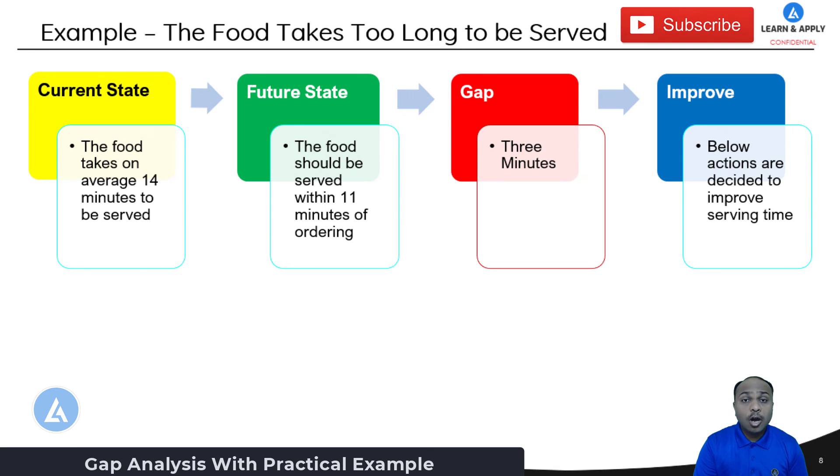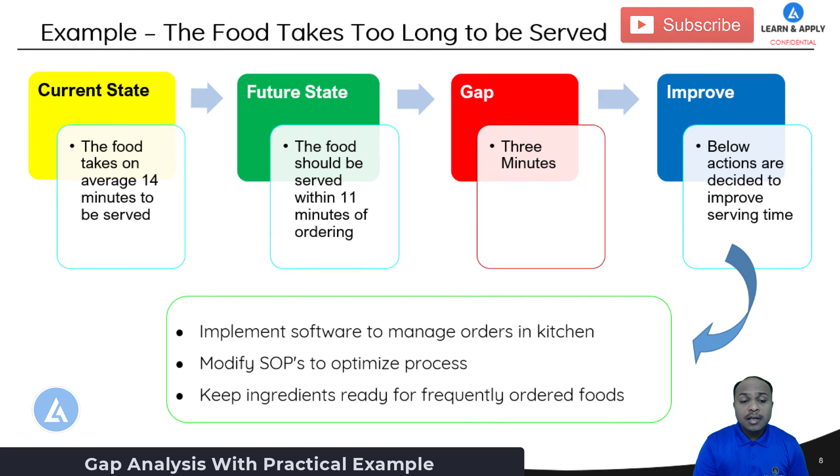Now what are these actions or what are the actions that we can plan? Like we can implement software to manage orders in kitchen, we can modify the SOPs to optimize the process, or we can also keep the ingredients ready for frequently ordered foods. So by implementing these three important actions we can eliminate the gap between what is the current state and what will be the future state.